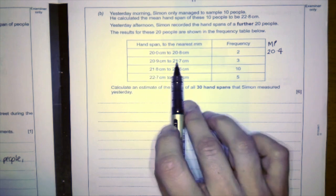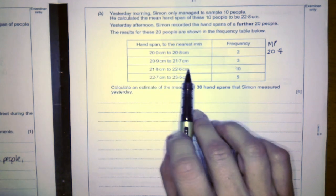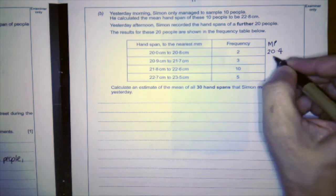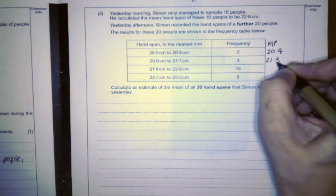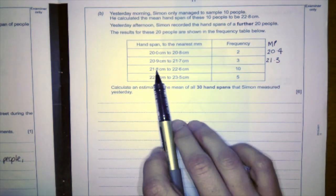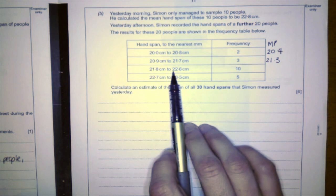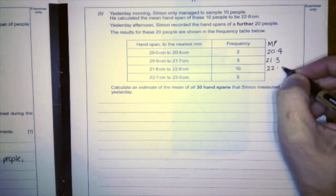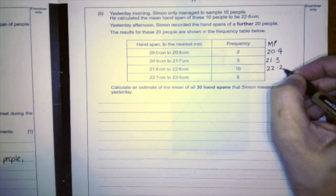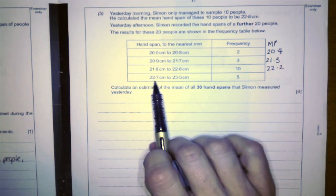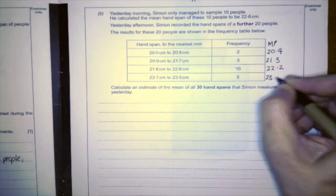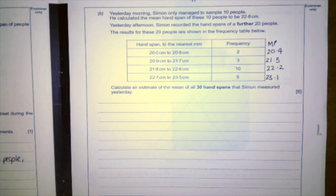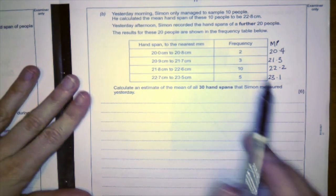The midpoint between 20.9 and 21.7 is 21.3. In between 21.8 and 22.6 is 22.2. And then the last one is going to be 23.1. So to work out the total,